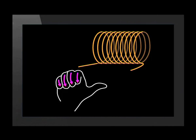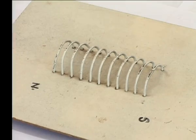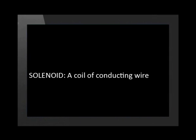Now let's look at a coil of wire like this. It has many individual wires, just like the electromagnet we saw earlier. We call a coil of conducting wire a solenoid. An electromagnet is simply a solenoid with current flowing in the wire.